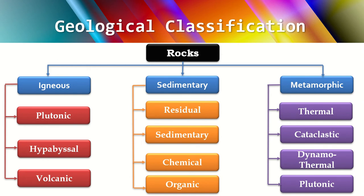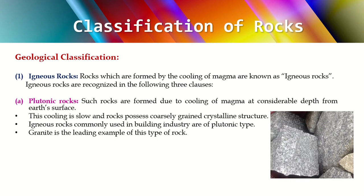Now let's get into the subdivisions with definitions and examples. Starting with geological classification — igneous rocks are those formed by the cooling of magma. Magma is essentially lava inside the earth's surface. When lava is inside the earth it is called magma, and lava can be defined as magma minus volatile gases, since those gases escape into the atmosphere once it reaches the surface.